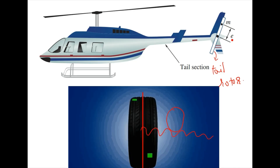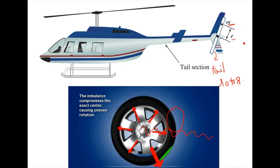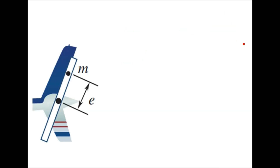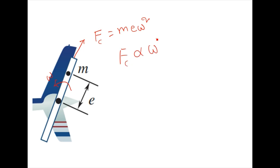Let us assume that the rotating unbalanced mass m is located at a distance e from the point of rotation. When the rotor is rotating with speed omega, the centrifugal force developed is Fc = m·e·ω². Here, Fc is proportional to omega squared, so what that means is as the speed of the rotor increases, the centrifugal force increases at a much higher rate. This centrifugal force develops an internal stress inside the component.